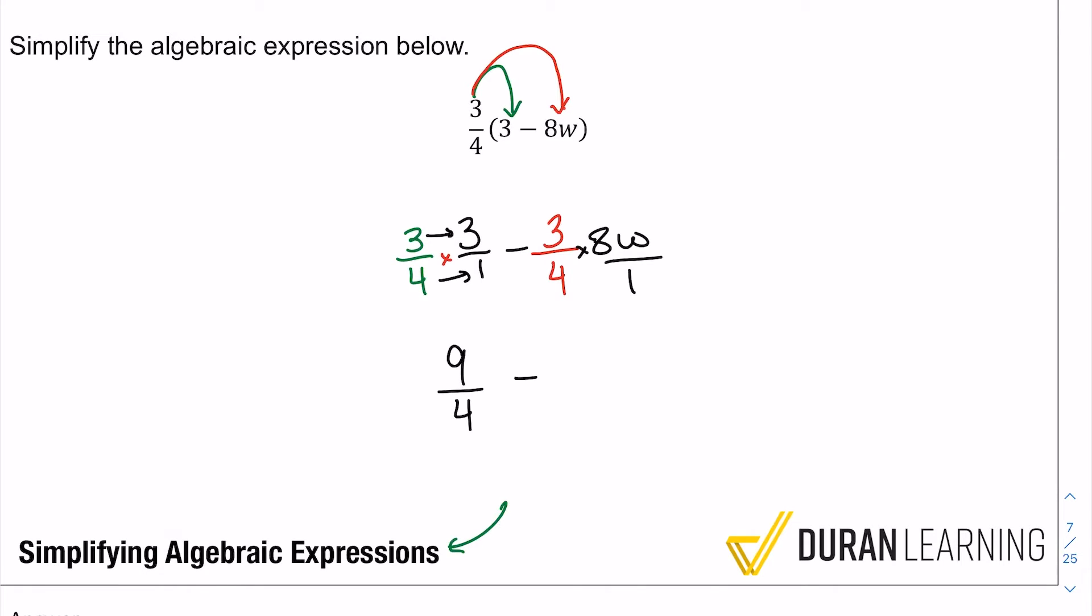So if we do the same thing here, three multiplied by 8w that'll give us 24w and that'll be divided by four times one.